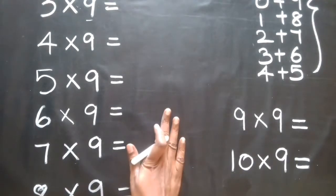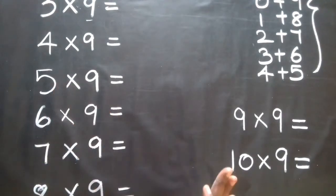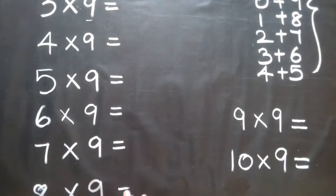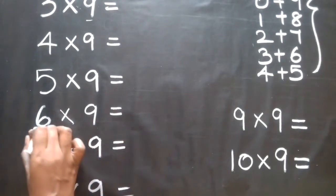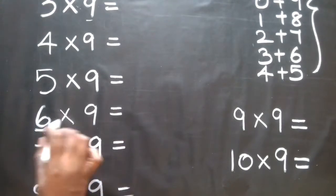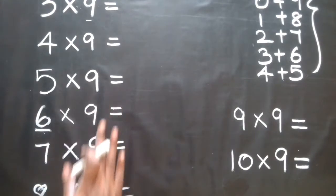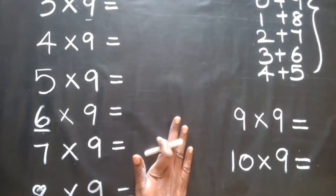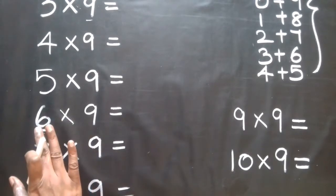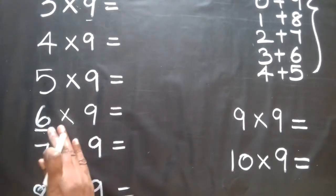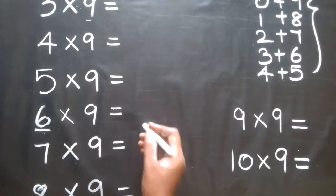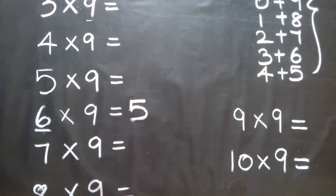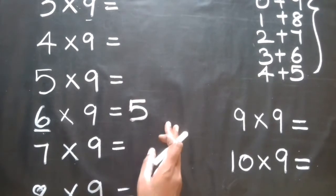Let's check this condition with an example. We will pick one number randomly — let's do 6 times 9. The number is 6. Since the table is called the 9 times table, there is 6, and the number before 6 is 5. Note that.